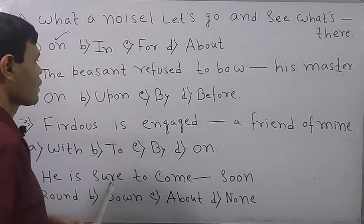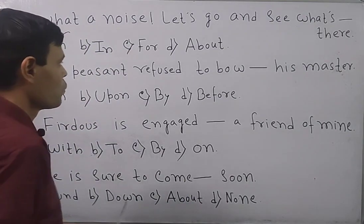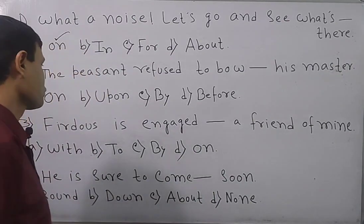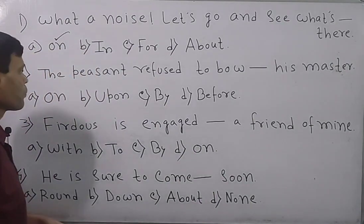Now, go next. The peasant refused to bow his master. Look through the options: on, upon, by, before.